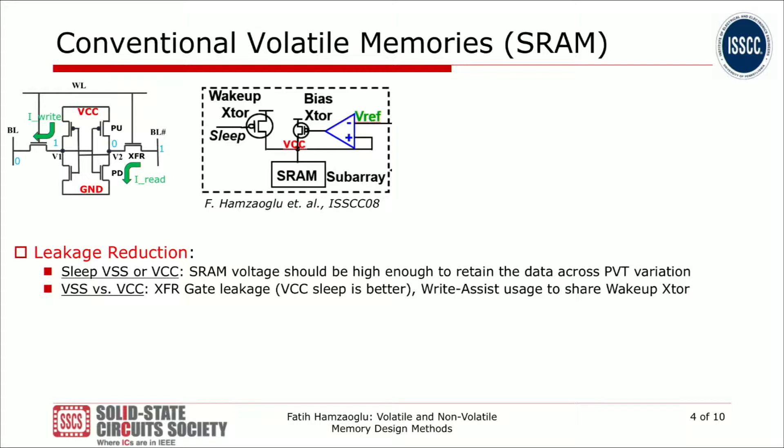Besides transistor sizing, what are the other things designers look into? First, leakage. In a typical SRAM of several hundred kilobytes or megabytes, you are only accessing a small portion of the array — the rest is leaking, especially the latches in the middle. So designers either collapse the VCC of the SRAM during idle mode or raise the VSS to control leakage, being careful to control that rail-to-rail voltage across PVT variation so you do not lose the data in the bit cell.